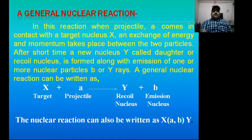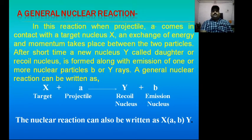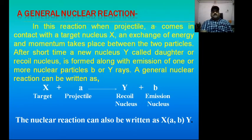A general nuclear reaction: consider X as a target on which A, which acts as a projectile, bombards on the target nucleus X, to form Y as a recoil nucleus — also known as daughter nucleus — and an emission or ejectile. Nuclear reactions can also be written as X (target nucleus), with A and B in brackets representing projectile and ejectiles, and Y as a recoil nucleus.